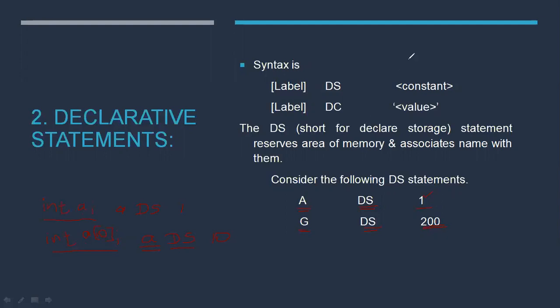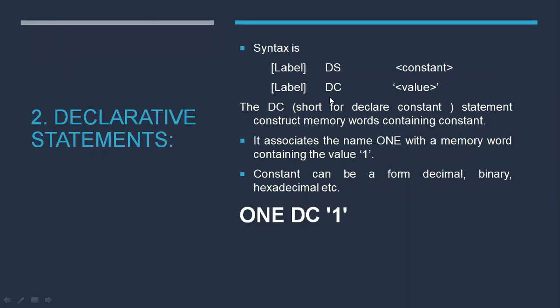Next is DC, which stands for Declare Constant. For any symbol, the value of that symbol is given by the DC statement. For example, ONE DC 1 indicates that whenever symbol ONE is used, its value is one. The DC statement constructs memory words containing constants and associates the name with a memory word containing that value. The constant can be in decimal, binary, or hexadecimal format. It is not compulsory that the symbol named ONE must hold the value one — ONE DC 10 is also allowed, meaning ONE holds the value 10. The machine only understands the syntax.